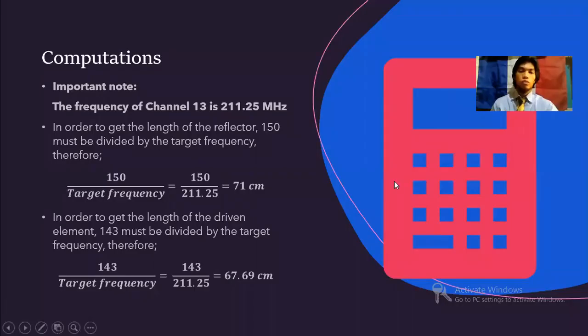Computations. The frequency of channel 13 is 211.25 MHz. We are able to compute the lengths of the elements using the following formulas. With the length of the reflector, 150 must be divided by the target frequency. So 150 over 211.25 is equal to 71 centimeters. With the length of the driven element, 143 must be divided by the target frequency. So 143 over 211.25 is equal to 67.69 centimeters.